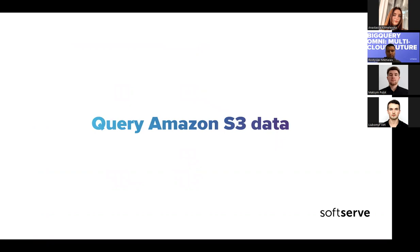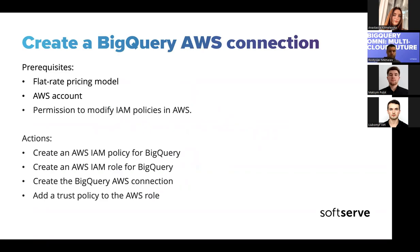Now let's take a look at a practical example of how to query Amazon S3 data and create all the required infrastructure. For prerequisites, if we're talking about a production use case, you'd use the flat-rate pricing model. For experimentation, on-demand works. You need an AWS account and permissions to modify policies and roles. To establish this connection and use BigQuery Omni, you need to create an AWS IAM policy and IAM role.